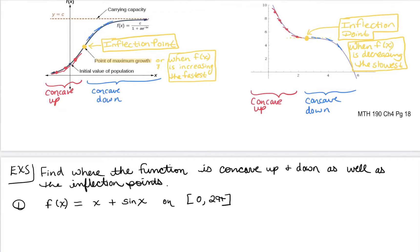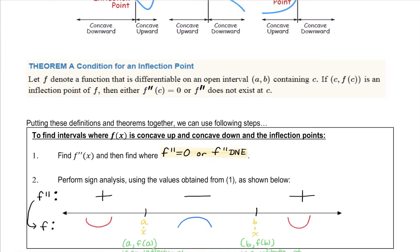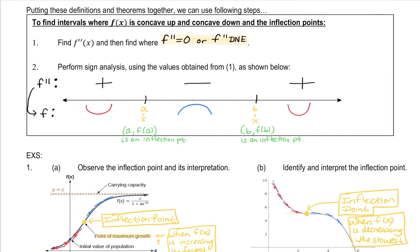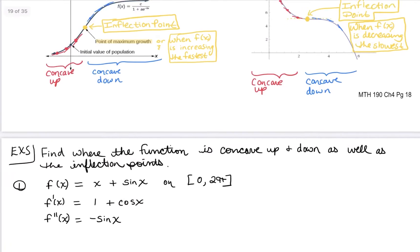Our test for concavity and to find inflection points is going to feel really similar to what we did for increasing, decreasing, and extrema. The difference is we're doing it on the second derivative. So if f(x) = x + sin(x), then f'(x) = 1 + cos(x) — that's what we'd use for increasing/decreasing and extrema. But we go on to the second derivative, which is -sin(x), in order to find concavity and potential inflection points.